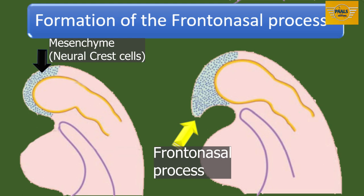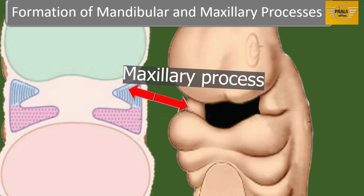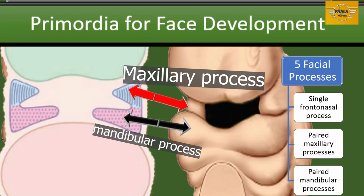With the frontonasal process formed, we consider the next two processes: the mandibular and maxillary processes. The mandibular arch, the first arch, will give off a bud from its dorsal end called the maxillary process, which grows ventromedially above the main part of the arch. The remaining part of the arch is then called the mandibular process. At this point, we have the five primordia for facial development: the frontonasal process, the maxillary processes, and the mandibular processes.